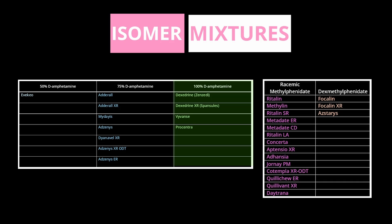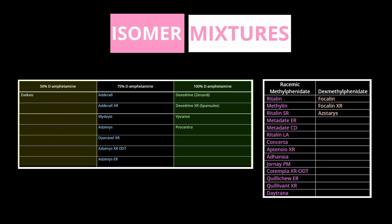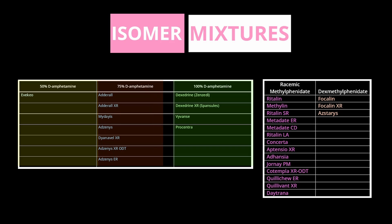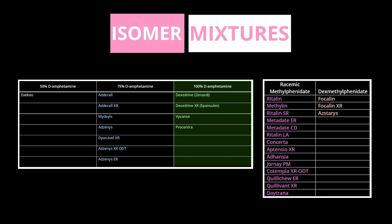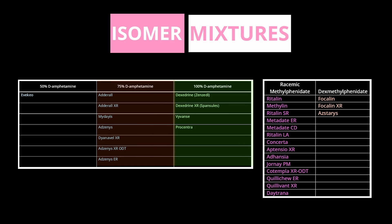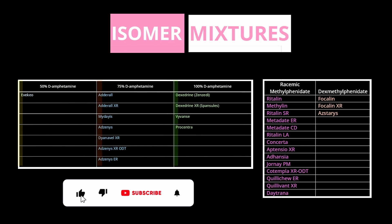Amphetamines come in three different isomer mixes: pure dextroamphetamine, a one-to-one ratio of D and L enantiomer (the racemic mixture), or a three-to-one ratio of dextroamphetamine to levoamphetamine. To summarize, amphetamines come as 100% dextroamphetamine, 75% dextroamphetamine, or 50% dextroamphetamine.